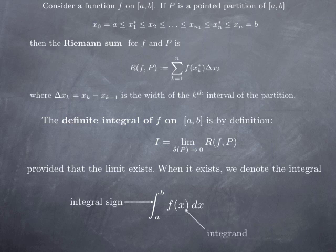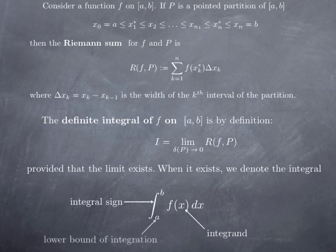The function under the integral sign is called the integrand — this is the function that we integrate. At the bottom of the integral sign we have the lower bound of integration, and at the top we have the upper bound of integration.